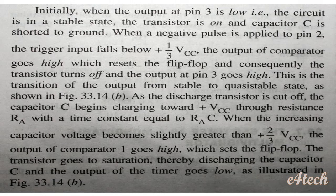Initially, when the output at pin 3 is low, the circuit is in its stable state. The transistor is in the ON condition and the capacitor C is shorted to ground. When a negative pulse is applied to pin 2, the trigger input falls below 1/3 VCC and the output of comparator 2 goes high, which resets the flip-flop. Consequently, the transistor turns off and the output at pin 3 goes high — this is the transition from stable to unstable state.